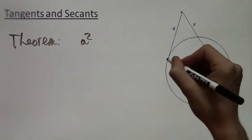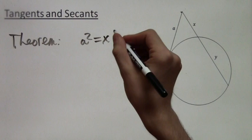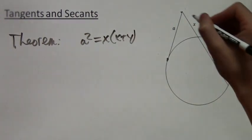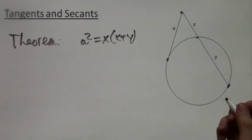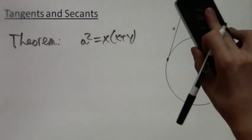And the theorem is that a squared equals x times x plus y, or the square of the tangent is equal to the outside part of the secant times the whole secant. So now we're going to apply this to several problems.